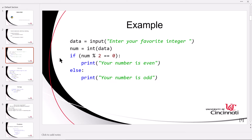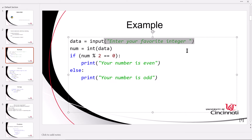In this case we're reading from the keyboard. You can see there is an input function. The input function puts up a prompt that says 'enter your favorite integer.' It stops the program, opens up a little input box, waits for you to type and press enter, and then assigns whatever you typed to the variable data.